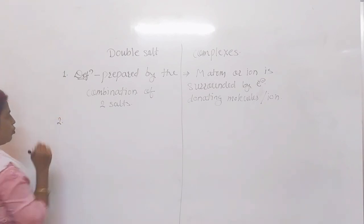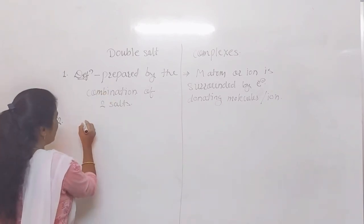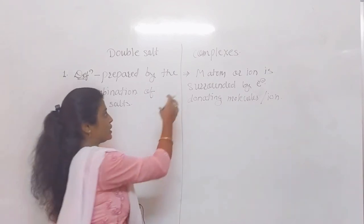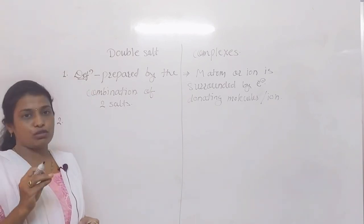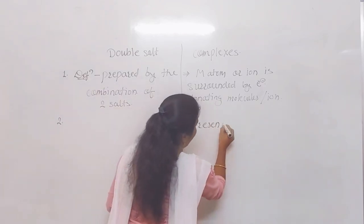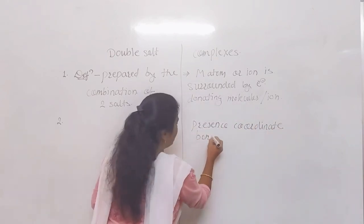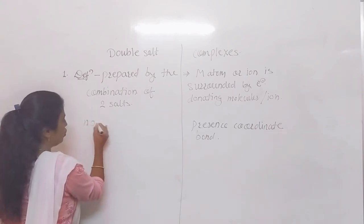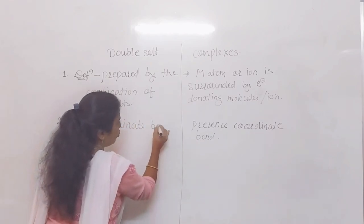Now we will discuss the second point. If we consider double salts, there is no coordinate bond. Whereas if we consider coordination compounds, there is a presence of a coordinate bond. So for double salts: no coordinate bond; for coordination compounds: presence of coordinate bond.